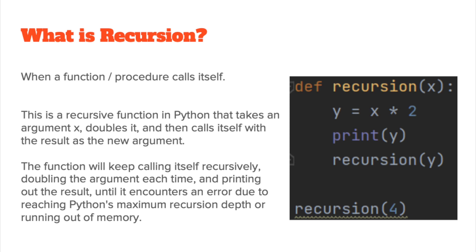Recursion is when a function or a procedure calls itself. There's an example on the right hand side of the screen where you can see a function called recursion and you'll see that within the code it calls itself. It takes the argument x, doubles it, and then calls itself with the result as the new argument, and it will keep calling itself recursively, doubling the argument each time and printing out the results until it encounters an error due to reaching Python's maximum recursion depth or simply running out of memory. That's the problem with recursion.